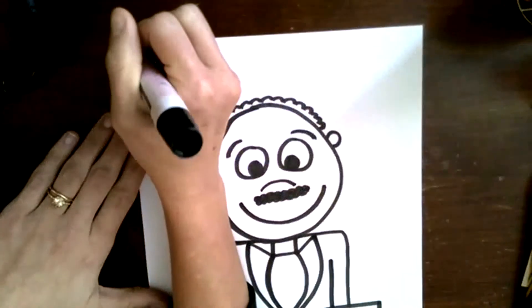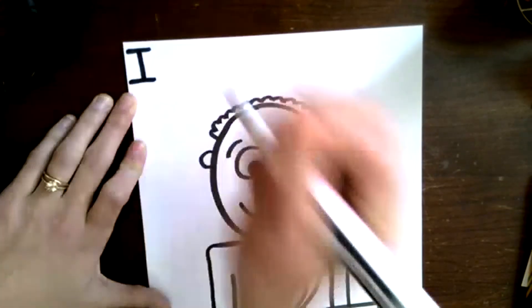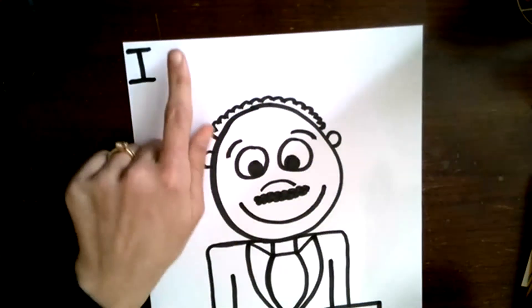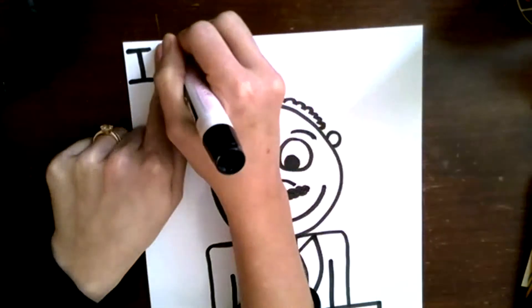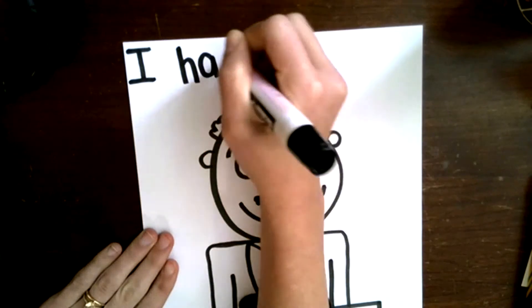So we're going to start all the way over on our left-hand side. We're going to use an uppercase I. That's a sight word, so we can write it real quick. We're going to put a space. I'm going to use my finger. I'm going to write the word 'have,' and I'm going to use all lowercase letters.